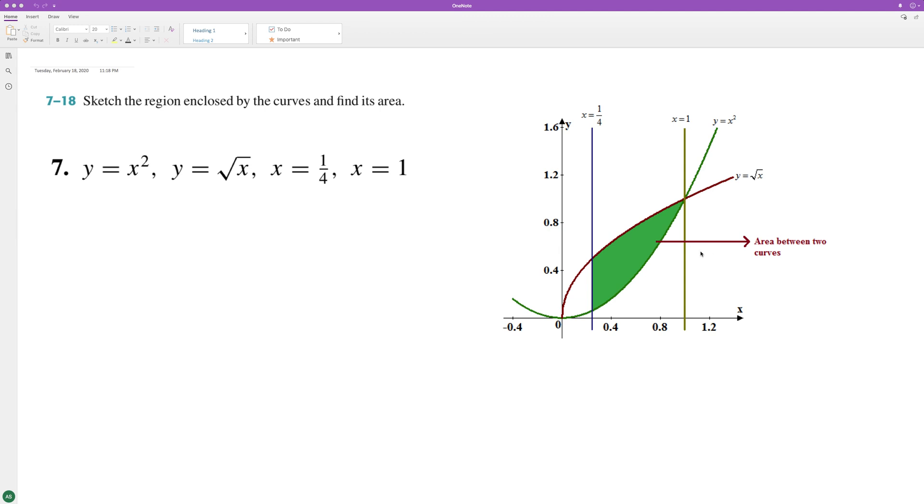So we want to find the area between these two curves and it looks like the square root of x is on top. So the integral starts as the square root, or the same thing as x raised to the 1/2, minus x squared. This whole thing is dx and we're integrating from, it looks like, 1/4 to 1.